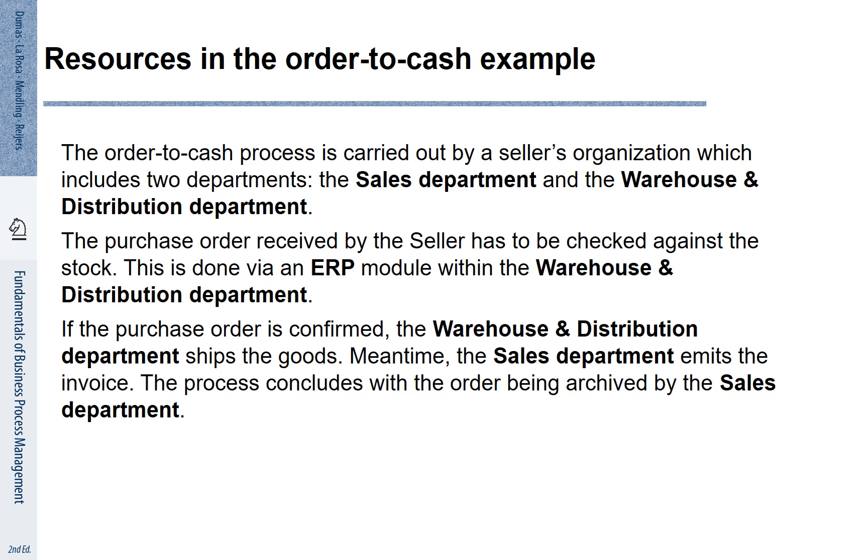Activities and processes are executed by people. We need to express that certain people are responsible for certain tasks. Have a look at our order to cash example. Here we have two departments involved: the Sales department and the Warehouse and Distribution department. We also might want to express that the ERP module is relevant in order to support the Warehouse and Distribution department.